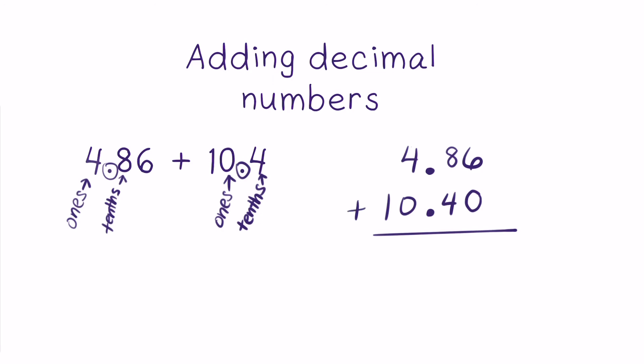So now I can add my two decimal numbers together. Now that I have them lined up in the correct place value, I'll add them just like I would add any other numbers, just keeping these decimal points in mind.